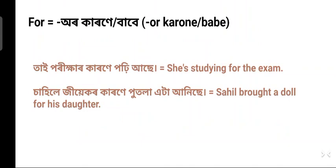Next, 'for' in Assamese: 'কাৰণে' (karane), 'বাবে' (babe), or the native 'আলৈ' (aloi). Example: 'Ty purika karane purhiyase' — she is studying for the exam. 'Ty' means she, 'purika' means exam, 'purika karane' means for the exam, and 'purhiyase' means is studying. In spoken Assamese, 'karane' is a bit more common than 'babe'.